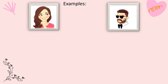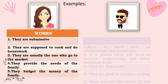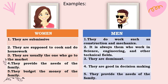Examples of stereotypes are the following: Women are known to be submissive — they are supposed to cook and do housework, they usually go to the market, and provide the needs of the family. Whereas men do work such as construction and mechanics; it is always them who work in science, engineering, and other technical fields. They are dominant, good in decision making, and provide the needs of the family.